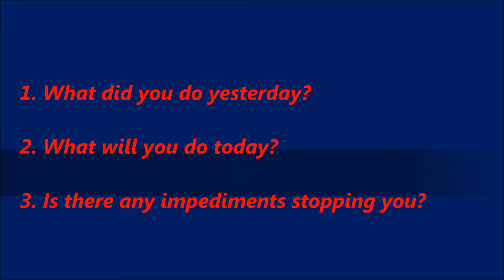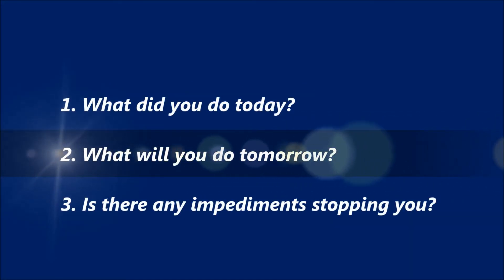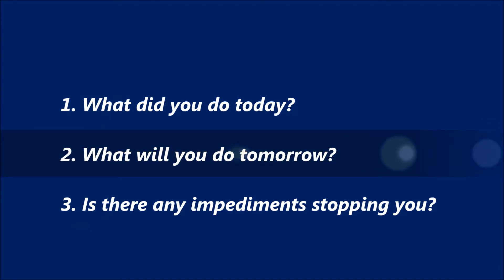These questions depend on your scheduled daily scrum meeting time. If your meeting is in the morning, the above questions apply. If your meeting is scheduled in the evening, the questions are: One: What did you do today? Two: What will you do tomorrow? Three: Are there any impediments stopping you? Every team member should participate in this meeting and provide a status update. The scrum master will discuss with individuals and schedule meetings at a convenient time.